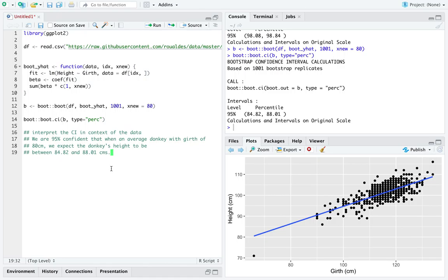We expect the donkey's height to be between 84.82 and 88.01 centimeters. There is a reasonable interpretation of the 95% bootstrapped percentile-based confidence interval for a prediction of a donkey's height when the girth of the theoretical donkey is 80 centimeters. Now, I've got a challenge for you in this video.